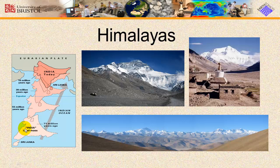India used to be an island, but about 15 million years ago it crashed into the Eurasian Plate. As continental crust was pushing against continental crust, the Himalayan mountain belt was pushed up. Mount Everest is the highest altitude mountain on our planet, standing at about 29,864 feet high — and it's still growing, because the Indian Plate is still pushing into the Eurasian Plate.